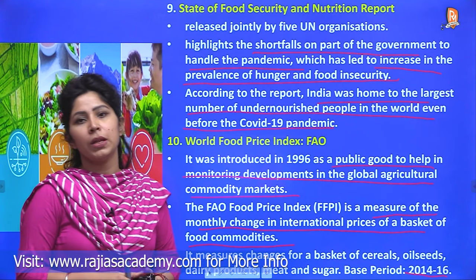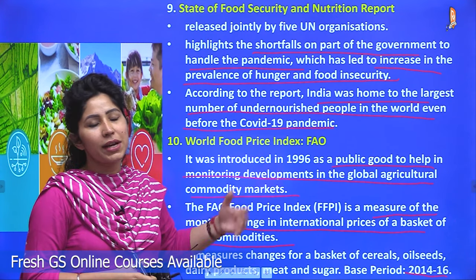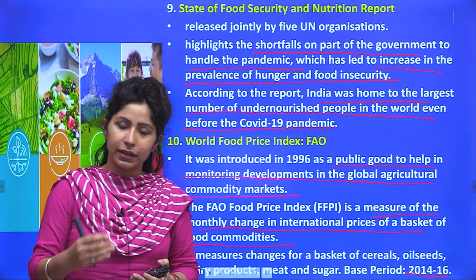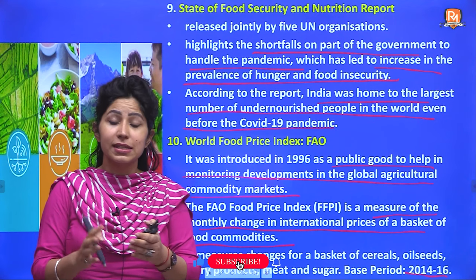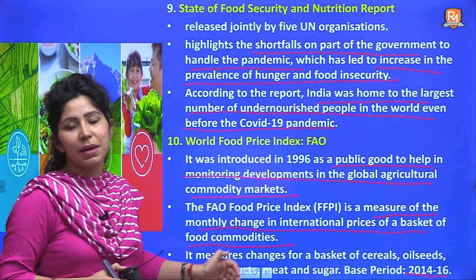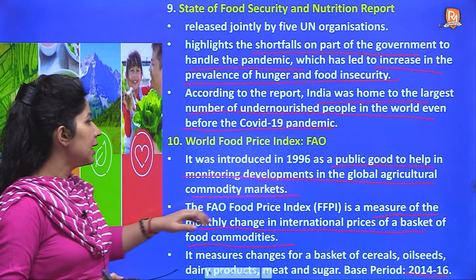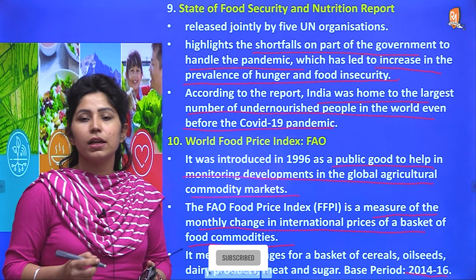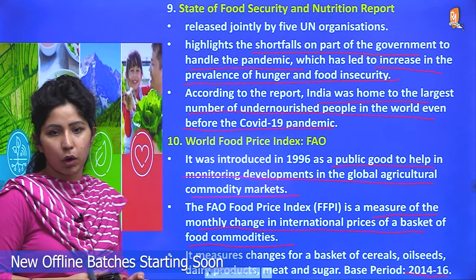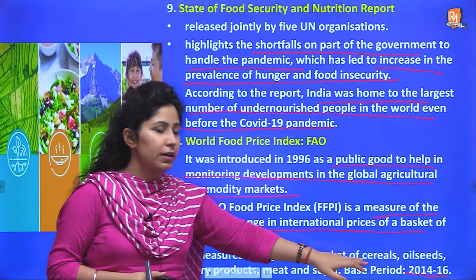The World Food Price Index is also released by FAO. Similar to India's CPI or WPI, it takes a basket of food commodities — including oil seeds, nutricereals, and similar items — and monitors how their prices change internationally on a monthly basis. It assesses how affordable food is for a particular person. This index has shown a commensurate increase especially after the COVID-19 pandemic, indicating that food has become more and more unaffordable for poor people. The base period for this index is 2014 to 2016.